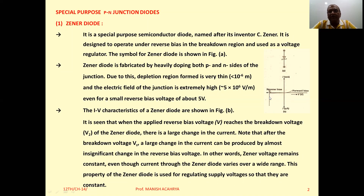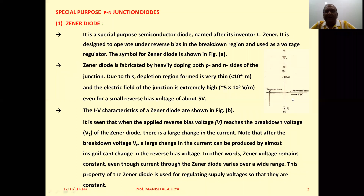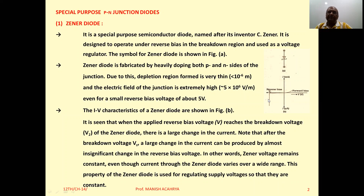Current increases rapidly, but the voltage remains constant. Depending on this particular characteristic in reverse bias, we can use the diode as a voltage regulator.